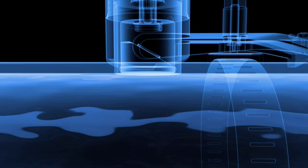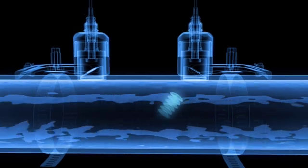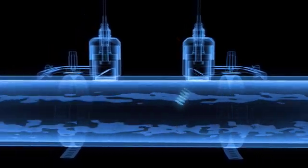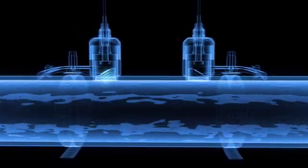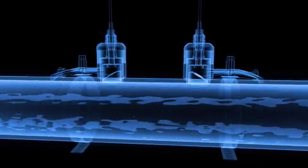With clamp-on sensors, the ultrasonic signal is passed directly through the pipe wall and into the fluid. The signal continues through the fluid, is reflected on the opposite pipe wall, and then measured by the second sensor. In this example, with a two-traverse installation.